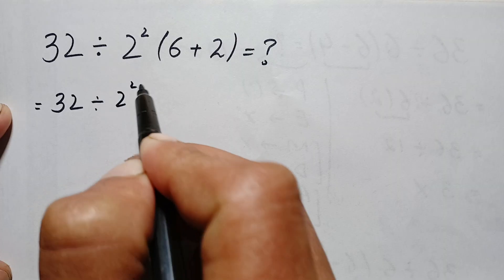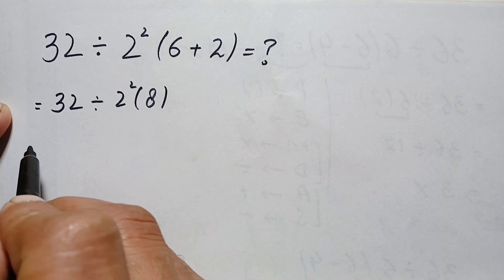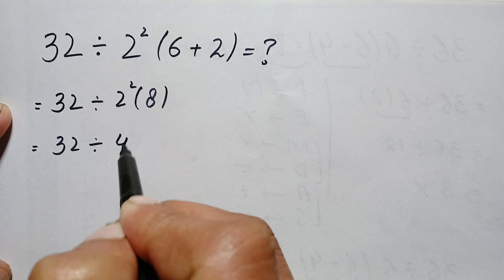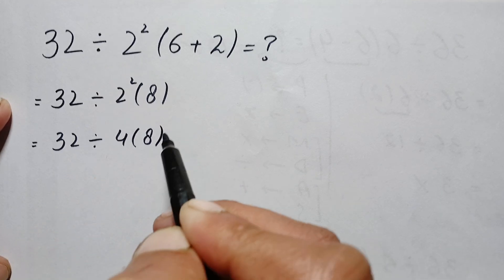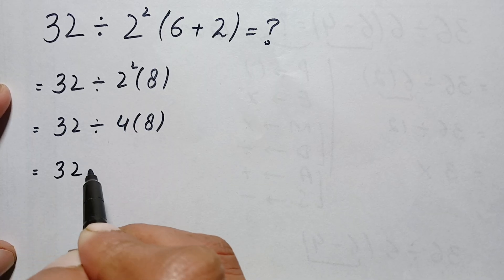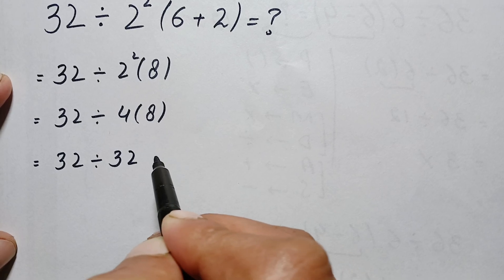2 squared times 6 plus 2 is 8, so this is 8. Now next, this is 32 divided by 2 squared, which is simply 4, so it will become 4 times 8. And 4 times 8 is 32, so this will become 32 divided by 32. 32 divided by 32 gives us 1.